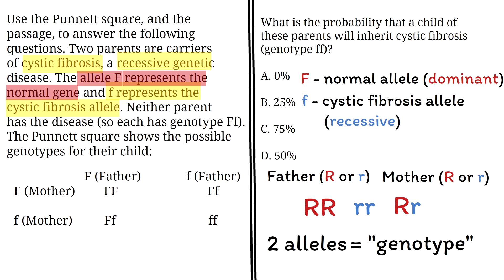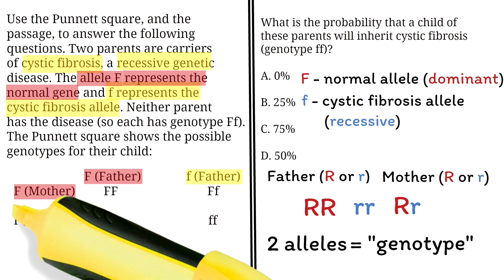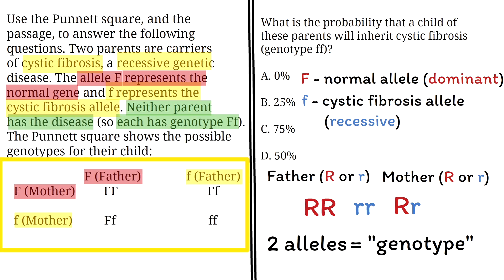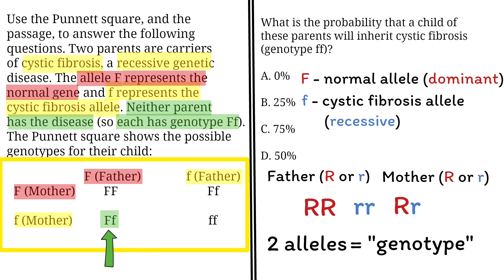If you look closely at the Punnett square, you'll see that both the father and the mother have two types of alleles: a dominant normal allele written as capital F, and a recessive allele written as lowercase f, which causes the disease. This means each parent has the genotype capital F, lowercase f. Since both parents have this genotype, neither parent has the disease. Inside the Punnett square, the child could inherit two dominant alleles from both parents, one dominant from the mother and recessive from the father, one recessive from the mother and dominant from the father, or two recessive alleles from both parents.